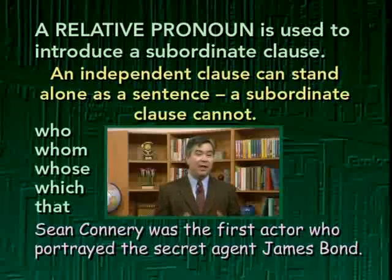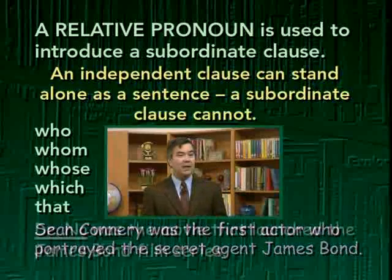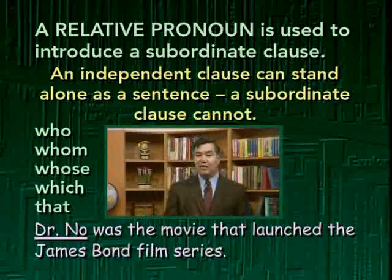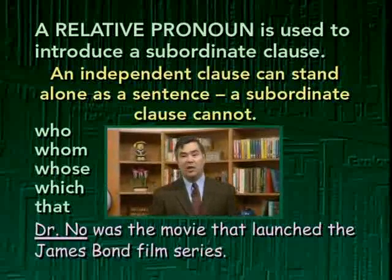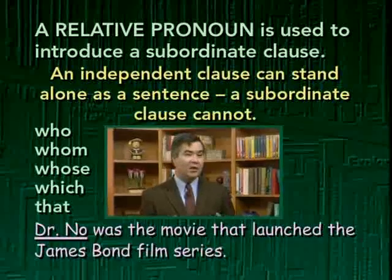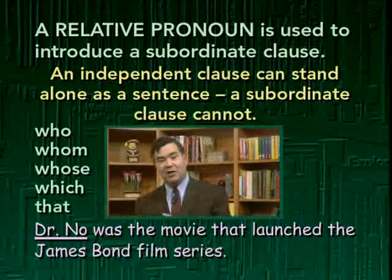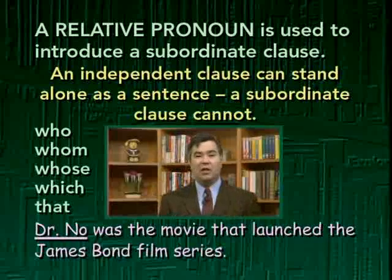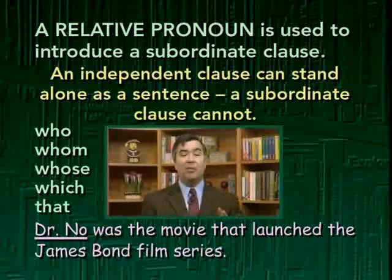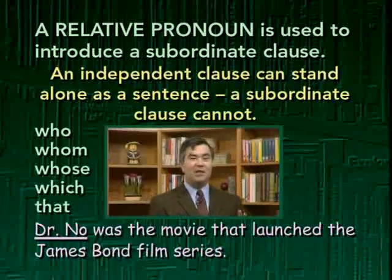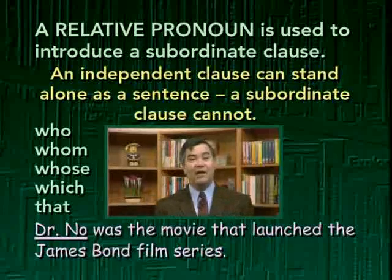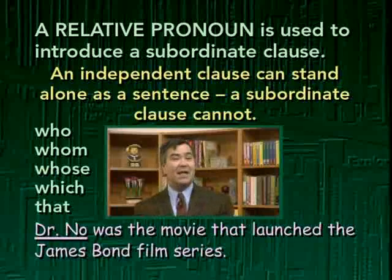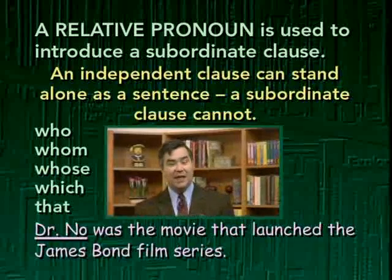Here's another example: 'Dr. No was the movie that launched the James Bond film series.' We have an independent clause — 'Dr. No was the movie' — followed by the subordinate clause 'that launched the James Bond film series,' introduced by the relative pronoun that. The entire clause modifies or gives more information about the noun movie: what kind of movie? The movie that launched the James Bond film series. So the subordinate clause is related to a specific noun in the independent clause and acts as a modifier.